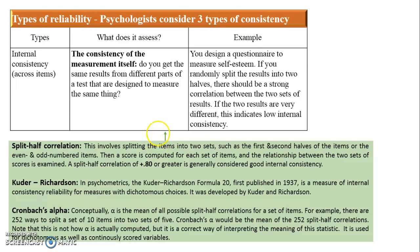The next approach is Kuder-Richardson, developed by Kuder and Richardson in 1937. It is also a measure of internal consistency but only for dichotomous questions — questions with only two possible answers. If questions involve continuous or other types of scales, you cannot use this approach.